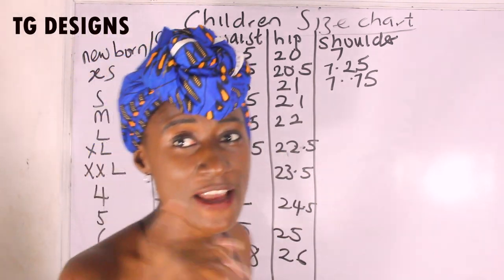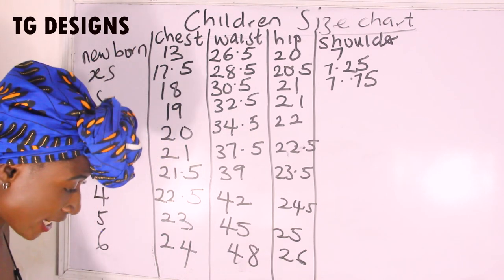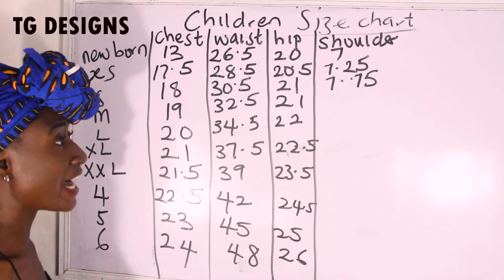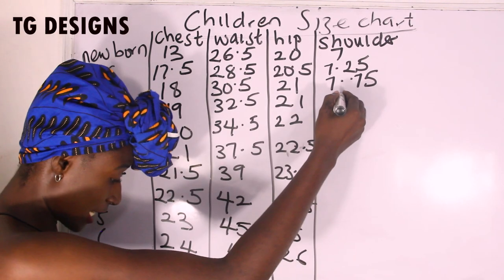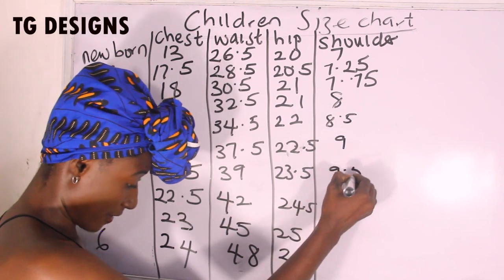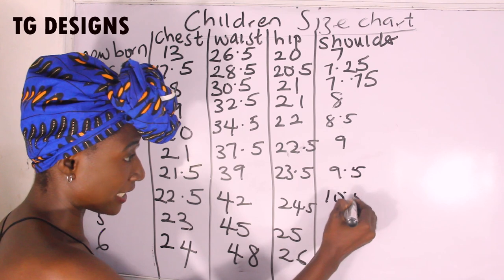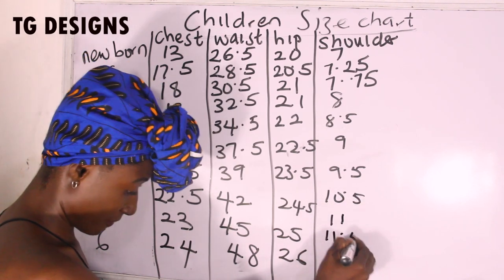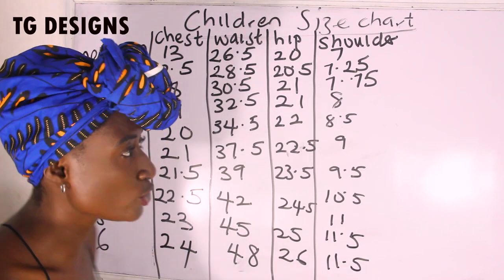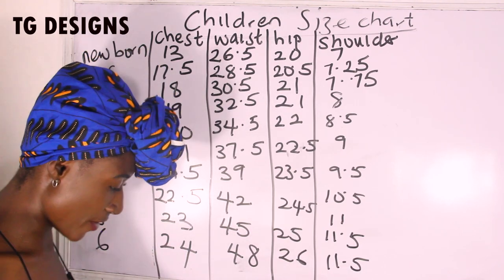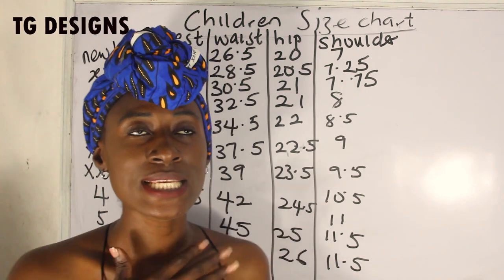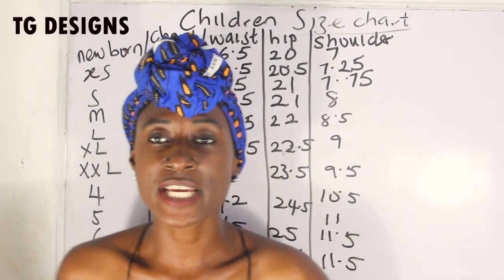The shoulder measurements are as follows: 7, 7.25, 7.75, then 8, 8.5, 9, 9.5, 10.5, 11, 11, and 11.5 inches. The shoulder measurement for children is very small. Also remember you divide the shoulder measurement by two when drafting patterns.